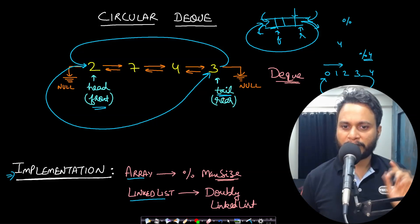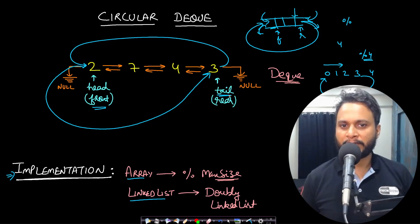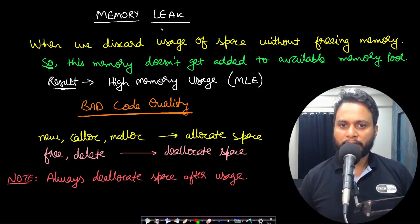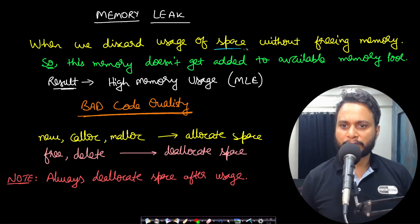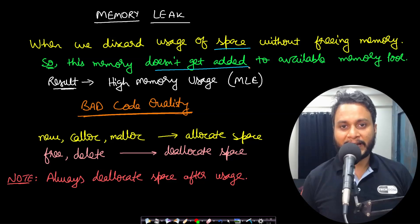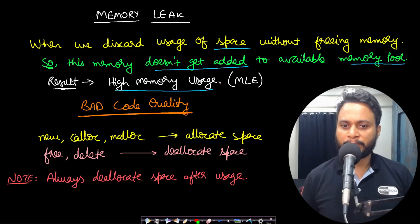This question expects that when implementing you should always use the most basic type of data structure — don't use a built-in deque or queue to implement a circular deque. One problem you might encounter when using a linked list implementation is memory leak. A memory leak is when we discard the usage of space without freeing the memory, so it does not get added back to the available memory pool, resulting in high memory usage or even memory limit exceeded.